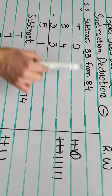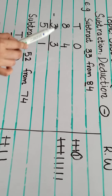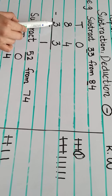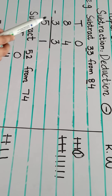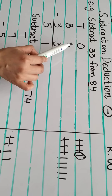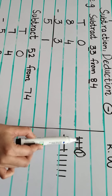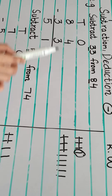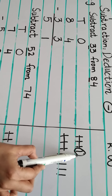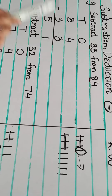Tens column, ones column. First write 84 — 8 in the tens and 4 in the ones. We are going to subtract 33. Write 3 in the tens and 3 in the ones. The first number in the ones column is 4. We will subtract 3. Draw 4 lines: 1, 2, 3, 4. We are going to subtract 3: 1, 2, 3. The one left: 1. So 4 minus 3 equals 1.